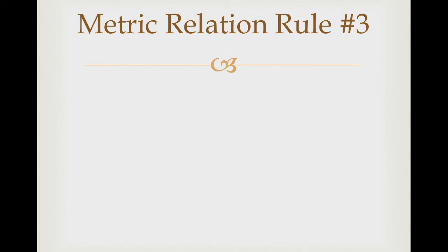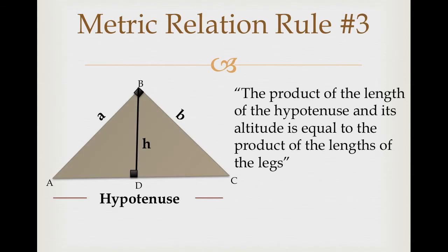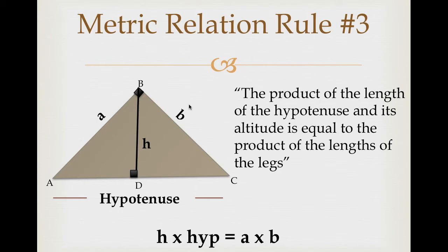The last rule: in words, the product of the length of the hypotenuse and its altitude is equal to the product of the lengths of the legs. In letter form: altitude times hypotenuse equals legs times legs — H times hypotenuse equals A times B.